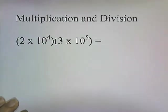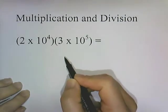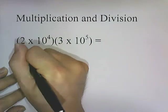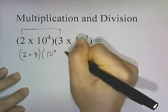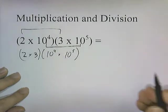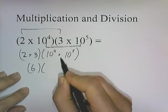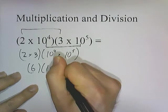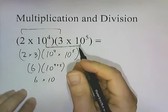Let's try multiplication and division now. 2 times 10 to the 4th times 3 times 10 to the 5th. By the commutative property of multiplication, we can rearrange these: 2 times 3, pairing up those coefficients, times 10 to the 4th times 10 to the 5th. 2 times 3 is 6, and when multiplying powers of 10 you just add the exponents — 10 to the 4th plus 5 — so this becomes 6 times 10 to the 9th.